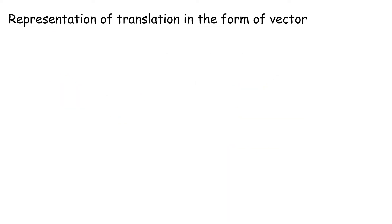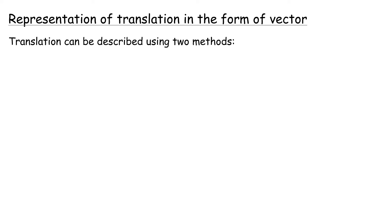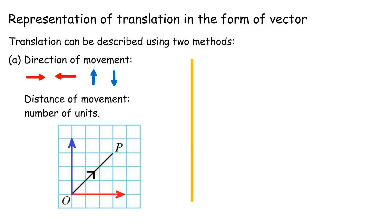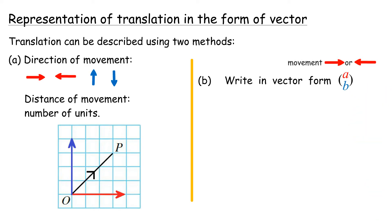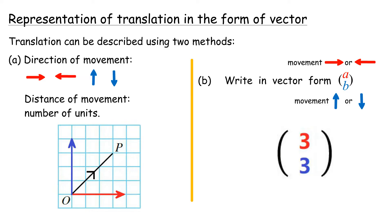Representation of translation in the form of a vector. A vector of translation is a movement that has direction and magnitude, represented by an arrow. Translation can be described by specifying the direction and distance of the movement using two methods: A. Direction of movement (right, left, upwards, downwards) and distance in number of units. B. In vector form, where A represents movement parallel to the x-axis, and B represents movement parallel to the y-axis.